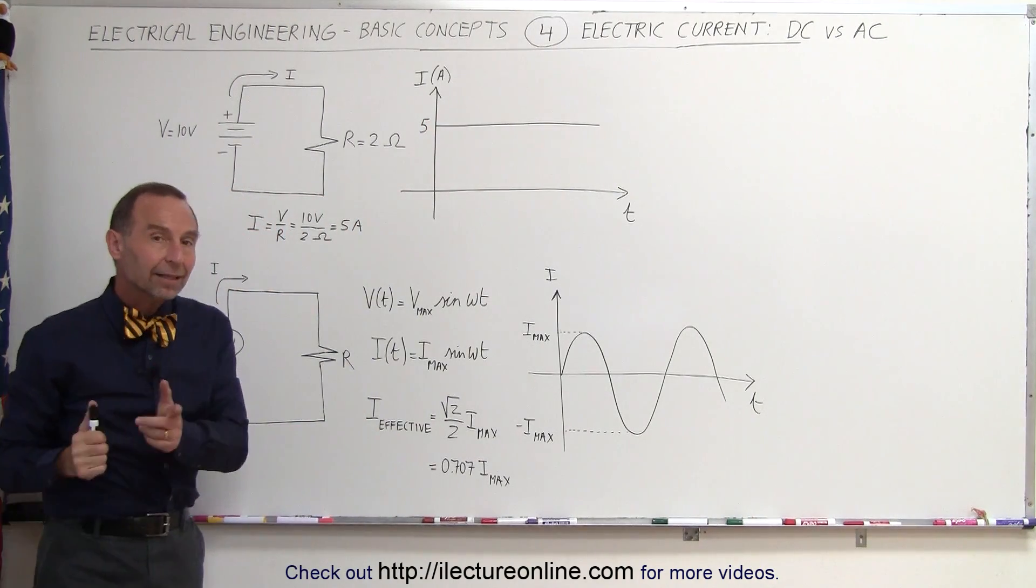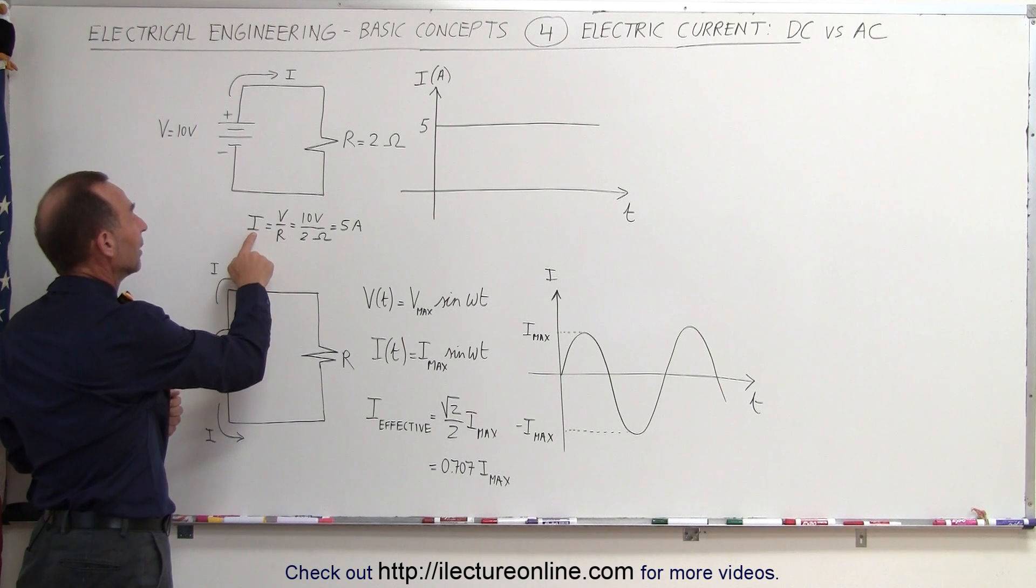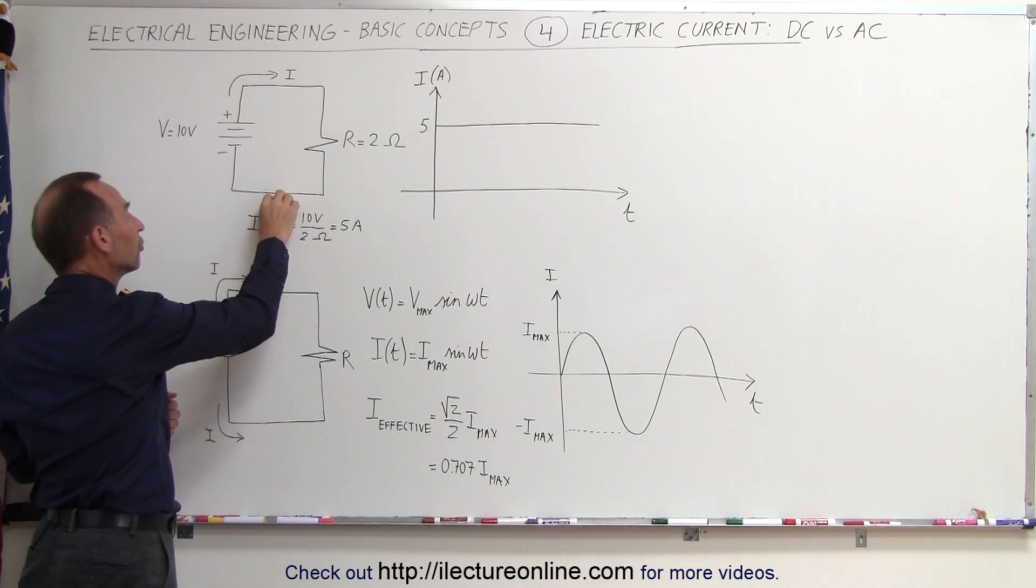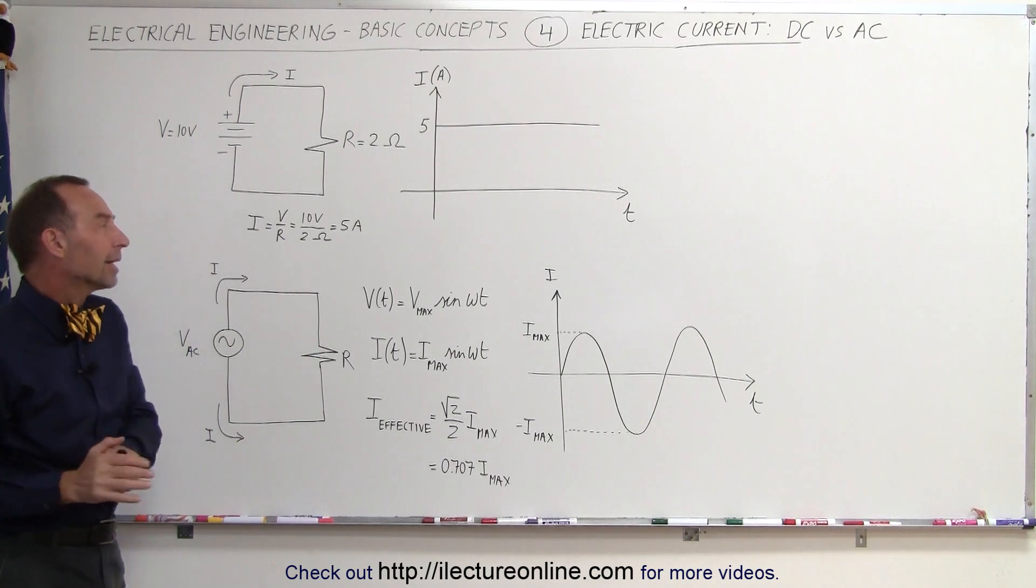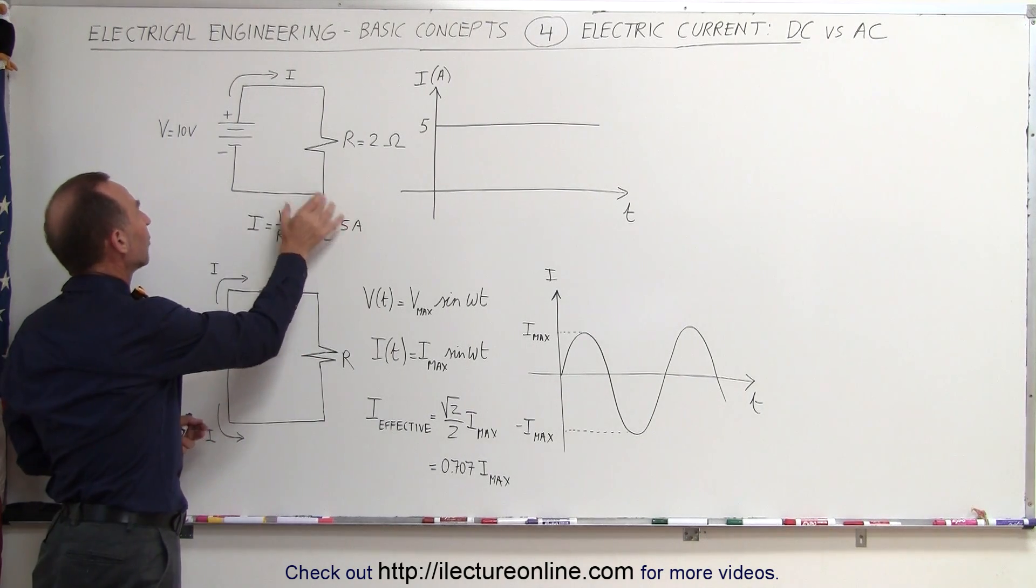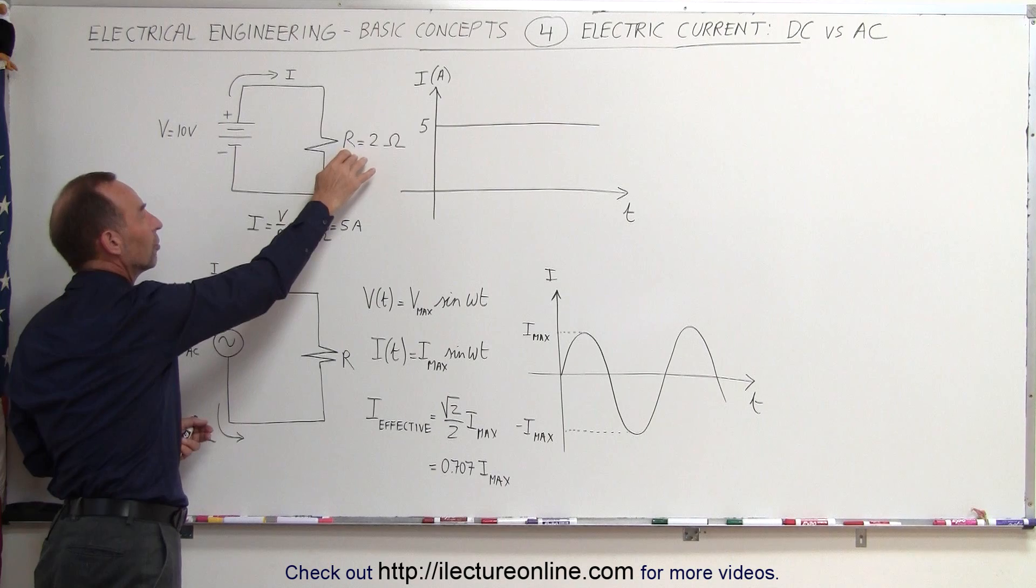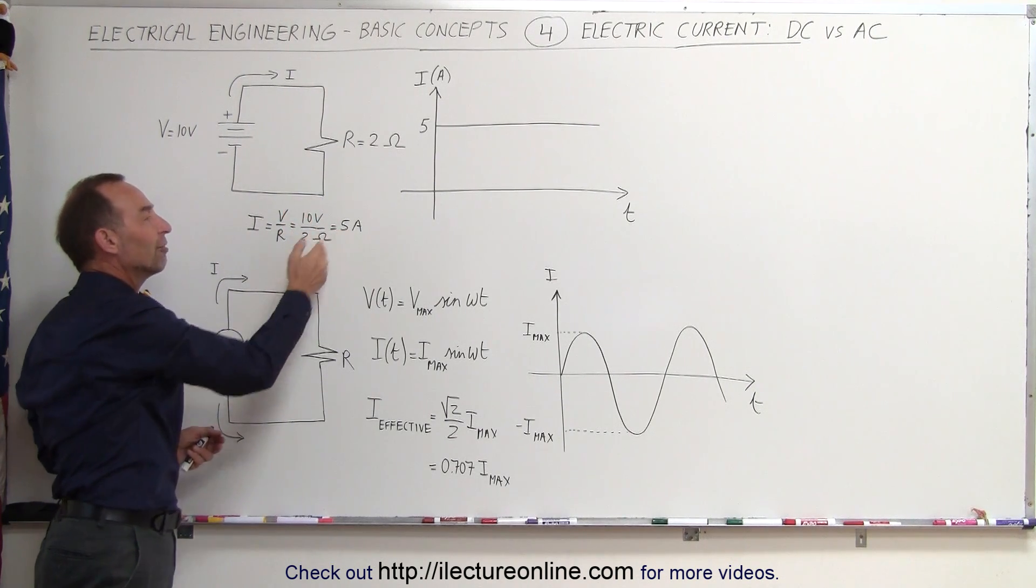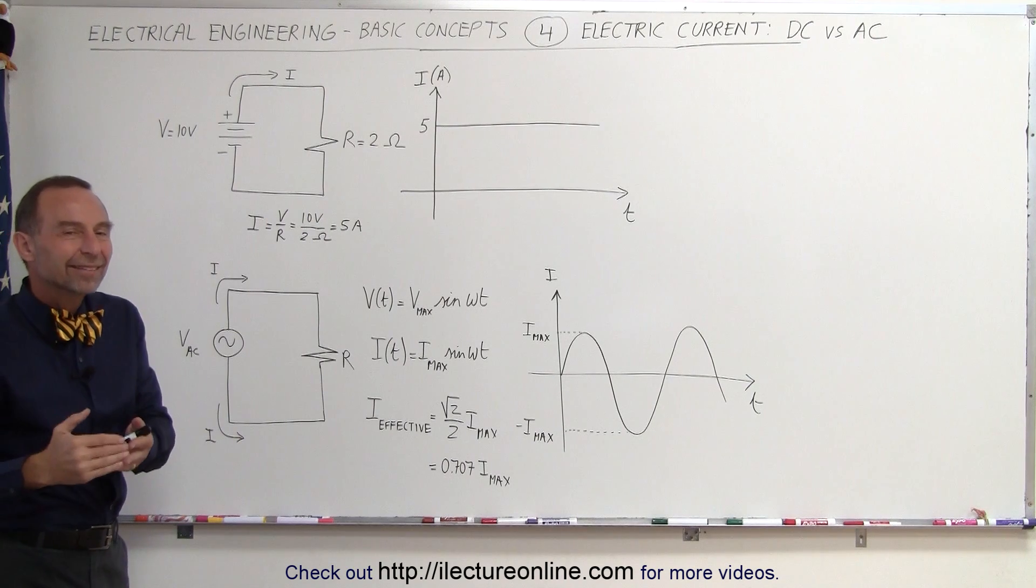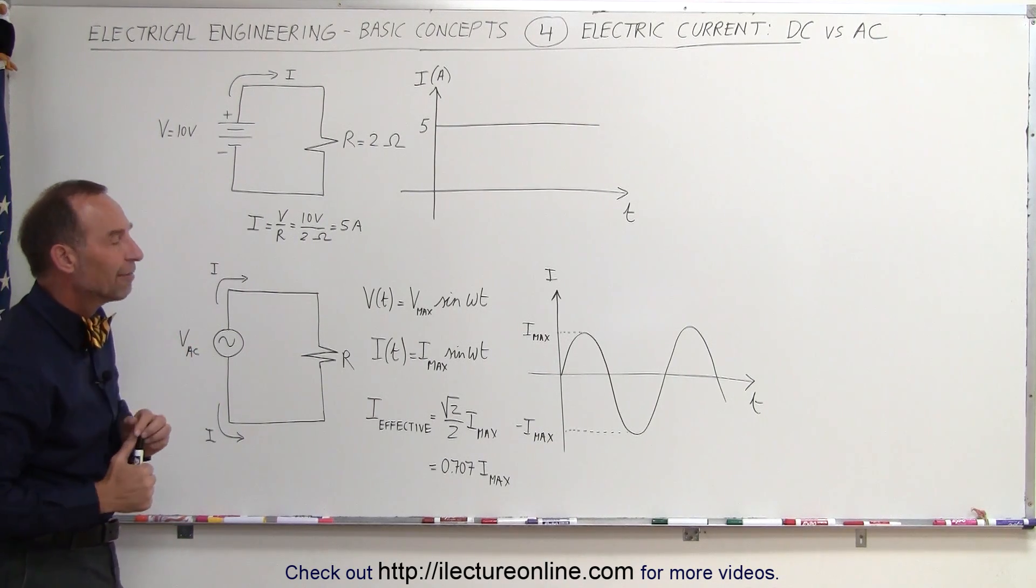The way we can calculate that current is by using Ohm's law that says that the current is equal to the voltage in the circuit divided by the resistance of the circuit. In this particular case, if we have a 10 volt battery source and a 2 ohm resistor in the circuit, then the current will be 10 volts divided by 2 ohms, which is 5 amps. And so that will be a steady state or direct current of 5 amps.